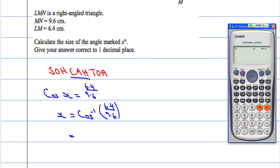Inverse is usually above cosine, so inverse cosine, cosine with a little negative 1 here. And 6.4 over 9.6, popping into the calculator.